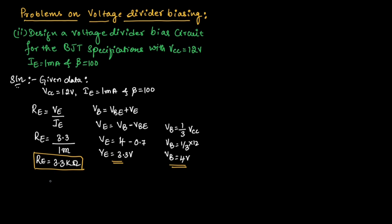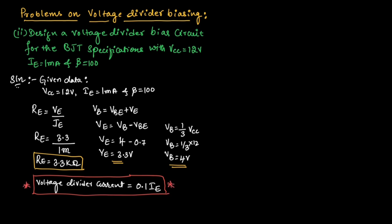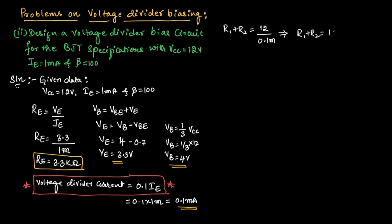For a voltage divider circuit, the voltage divider current equals 0.1 times IE. So the voltage divider current equals 0.1 into 1 milliampere, which is 0.1 milliampere. Now let us find the voltage divider resistances R1 plus R2. R equals VCC divided by the voltage divider current, which is 12 volts divided by 0.1 milliampere. So R1 plus R2 equals 120 kilo ohms.